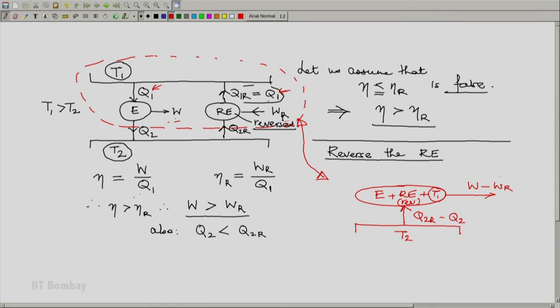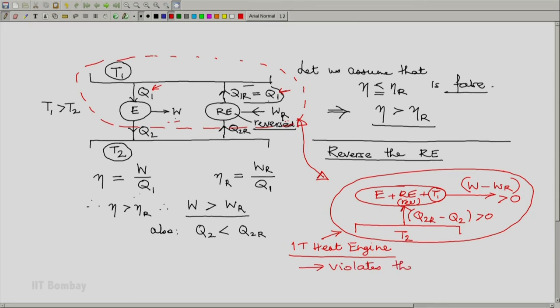And now you will notice that not only is the work done greater than zero, heat absorbed greater than zero, but the resulting entity happens to be a 1T heat engine. Now, a 1T heat engine obviously violates the second law. That means we must have done something which has led to the violation of the second law and that something must not be true.